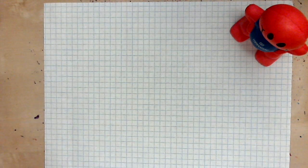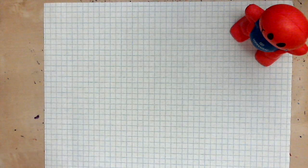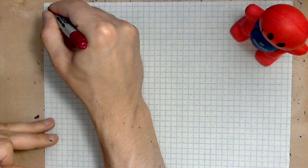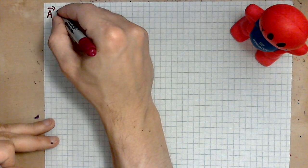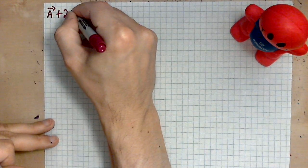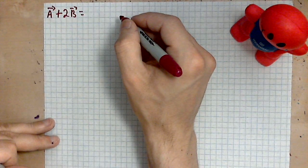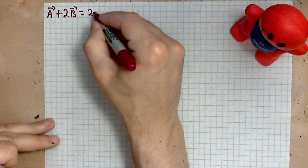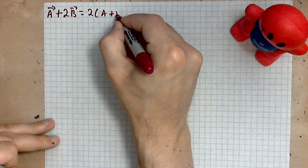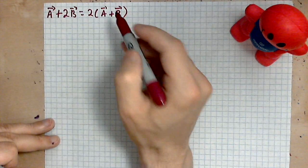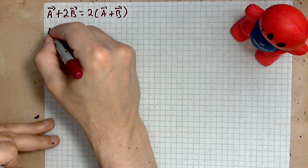Like x, y, and z, the concept is the same. So let's take a look at the equation to be solved. It has the following form: a plus 2b equals 2 times (a plus b). This is a vector equation.